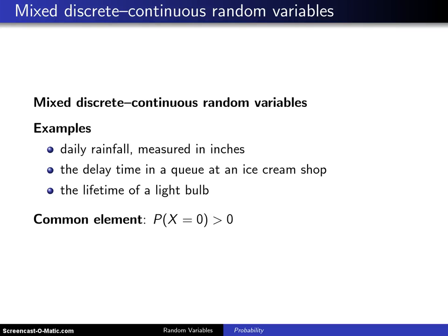So far, random variables have been classified as either discrete random variables or continuous random variables. It turns out there is a third type of random variable that is known as a mixed discrete-continuous random variable.